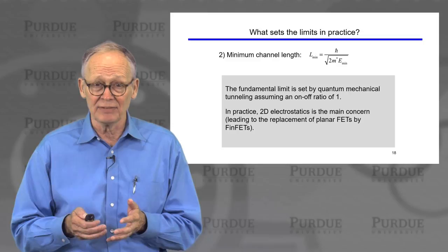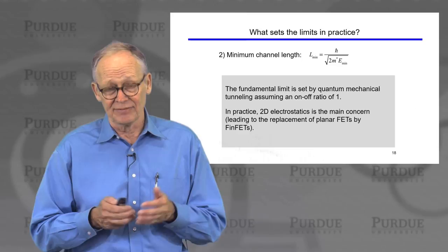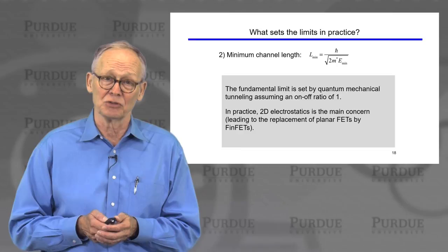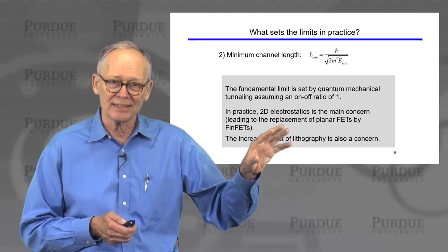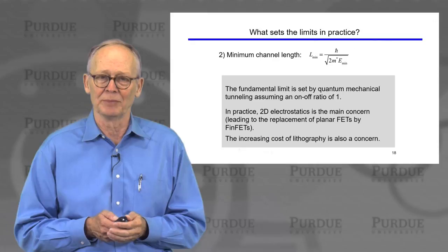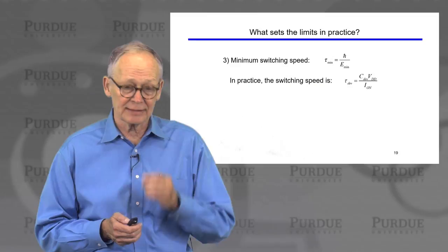In practice, electrostatics is what has been determining channel lengths, not quantum mechanical tunneling. That's what led to the replacement of planar MOSFETs by FinFETs — to control short channel effects and 2D electrostatics. Eventually, gate-all-around devices or nanowire devices may be the next step in controlling electrostatics before quantum mechanical tunneling produces a fundamental limit. The increasing cost of lithography needed to produce fine lines for short channel lengths is also becoming a more important practical factor.